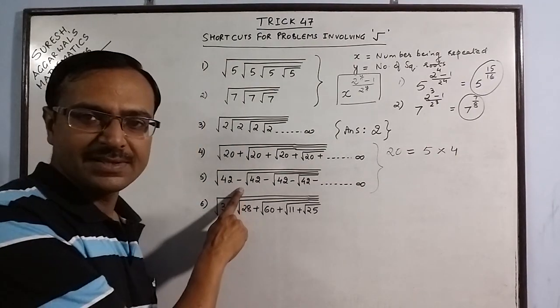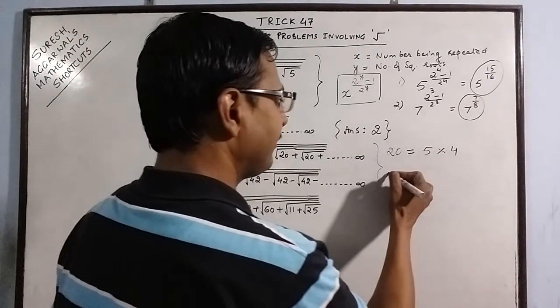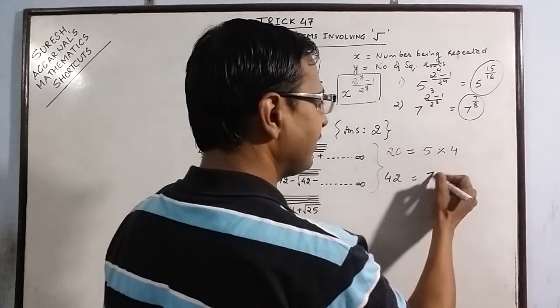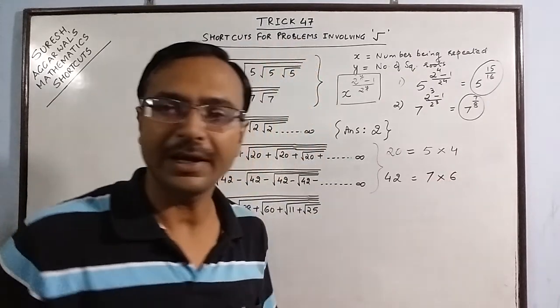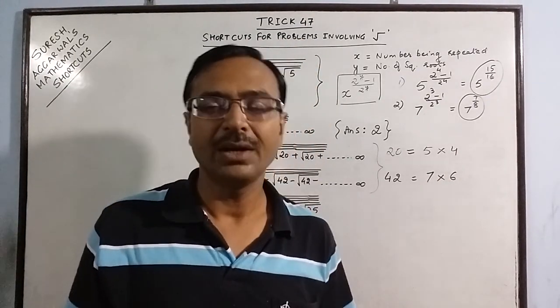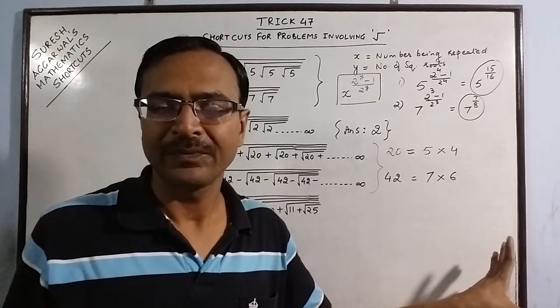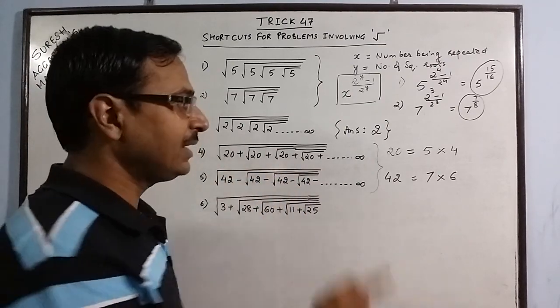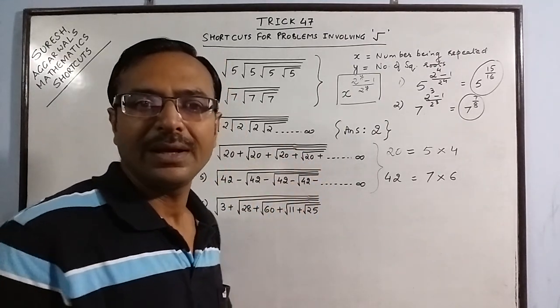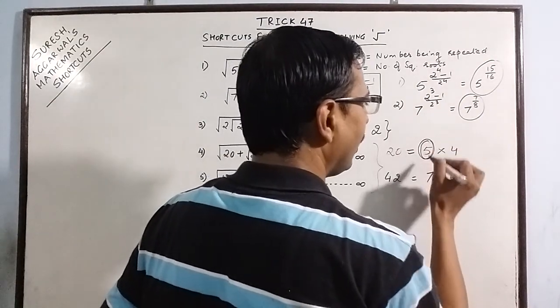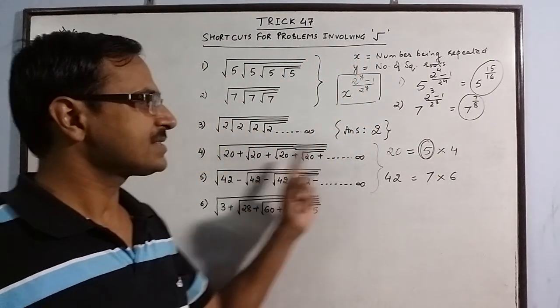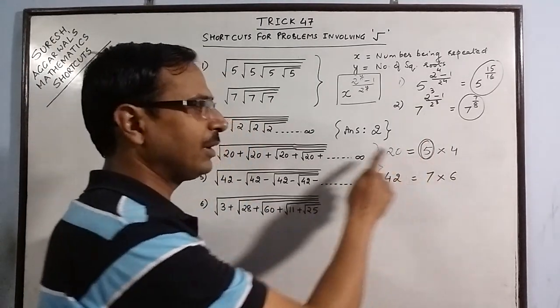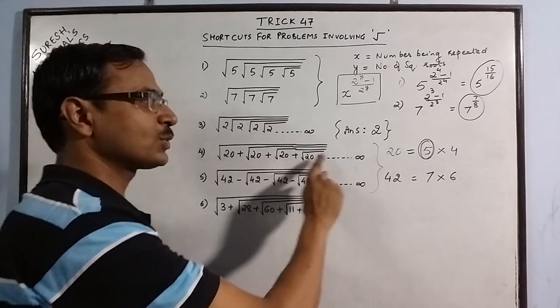Similarly, when you have difference, you apply the same rule. Here we have 42 and 42 can be written as 7 into 6. Again, the difference of the two factors should be 1. They should be consecutive natural numbers. When you have positive sign, then your answer is the higher number of the two factors. In this case, we have 5 into 4. 5 is the higher number, so the larger number will be the answer. So your answer for this question is 5.